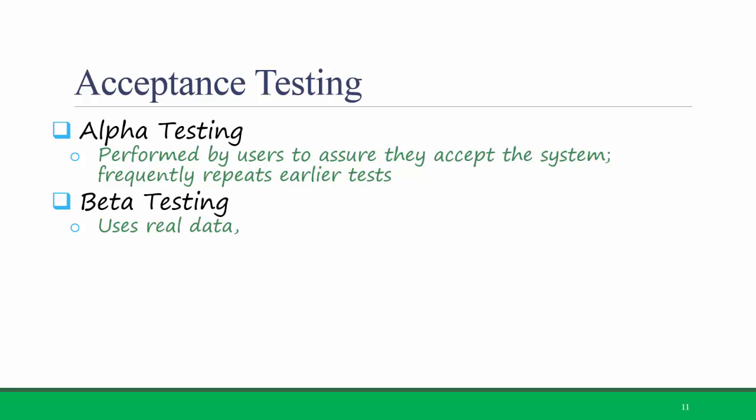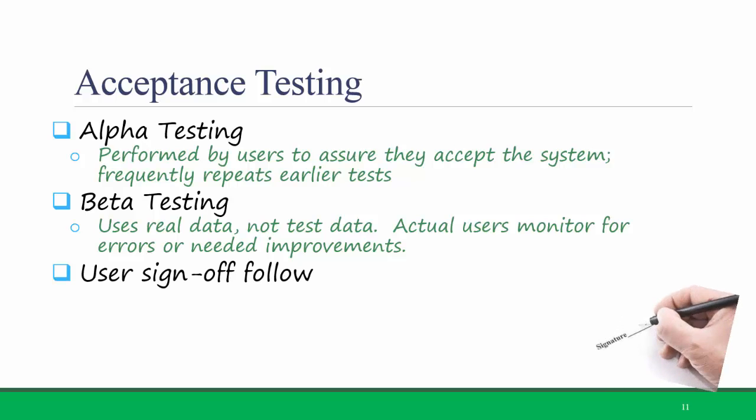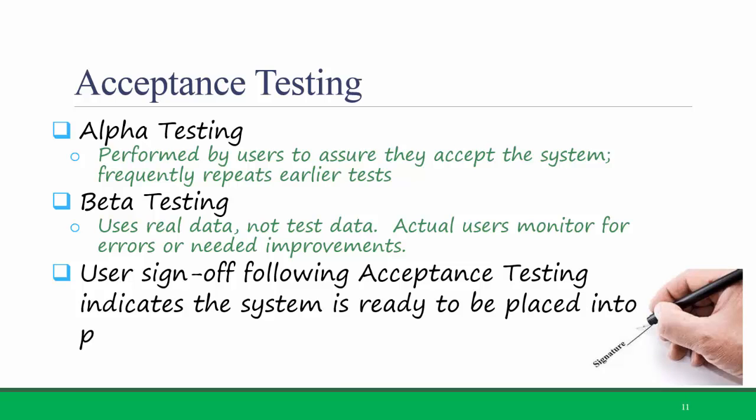In beta testing, users use real data, not test data. Actual users monitor for errors or needed improvements. So if we did beta testing of a Titanium-like learning management system, we would let professors use the system for a semester to actually administer their assignments, quizzes, and grades. And then we would receive feedback from them on their actual use of the system. User sign-up following acceptance testing indicates that the system is ready to be placed into production.